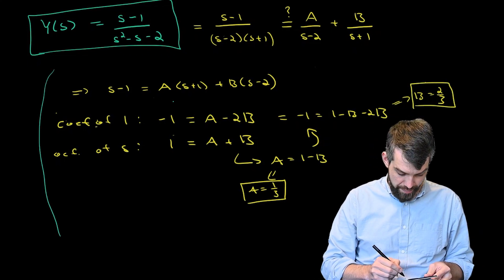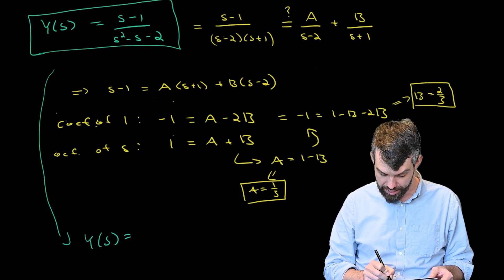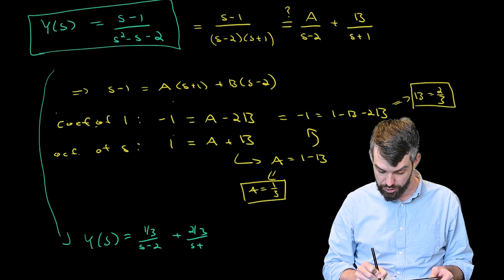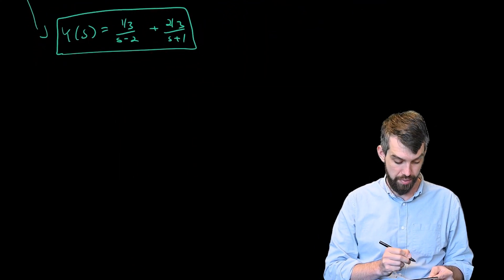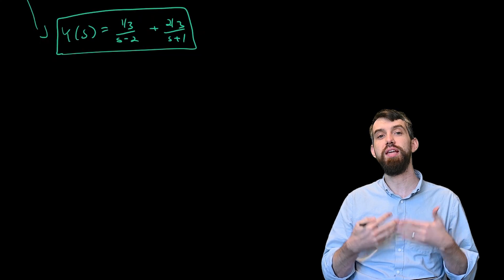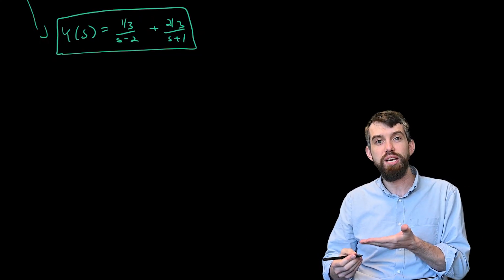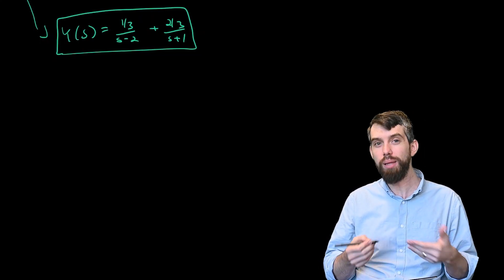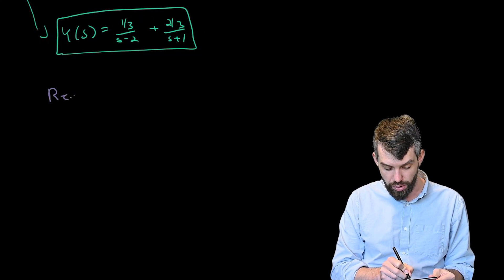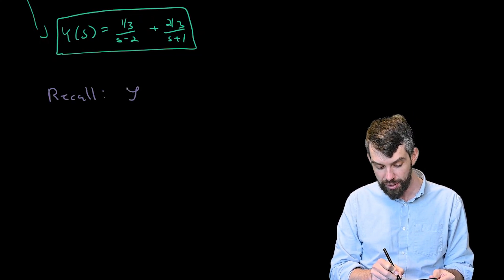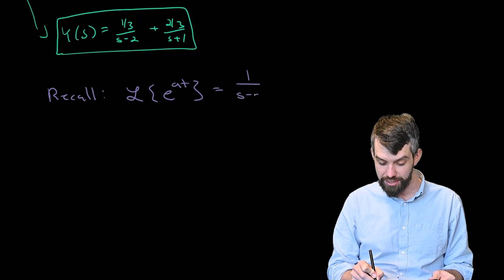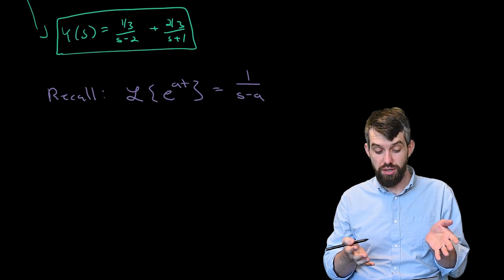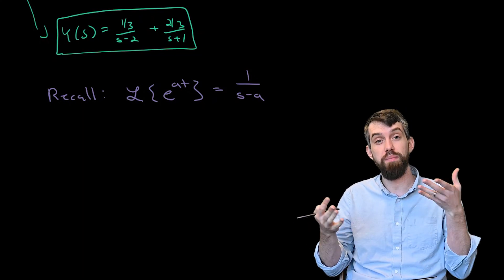Having completed the partial fractions, Y(s) = (1/3)/(s−2) + (2/3)/(s+1). I can now recognize these in terms of a known Laplace transform: the Laplace transform of e^(at) is 1/(s−a). So Y(s) looks like 1/(s−a) for two different values of a — one being a = 2 and the other a = −1.